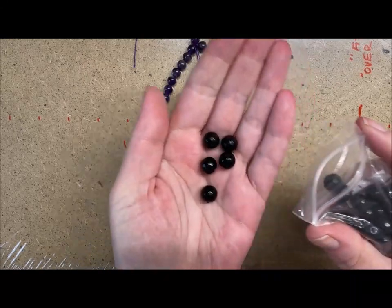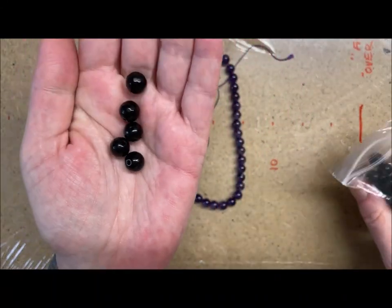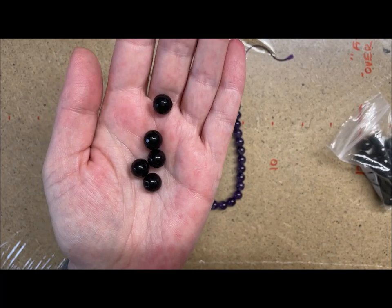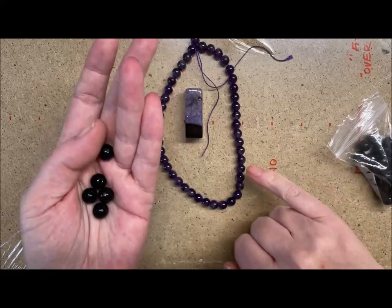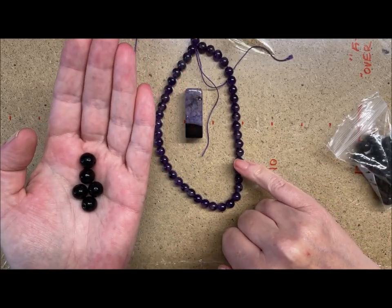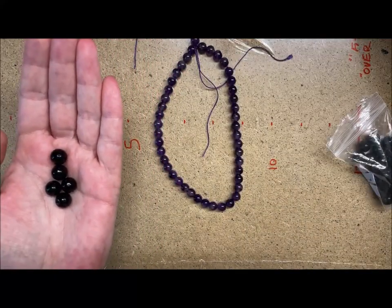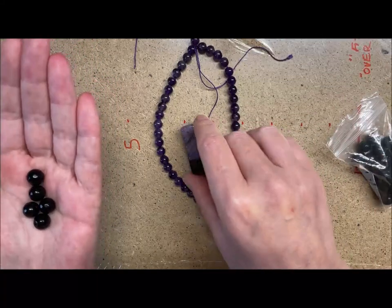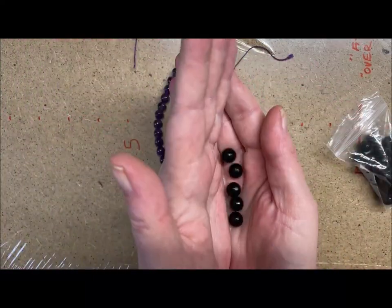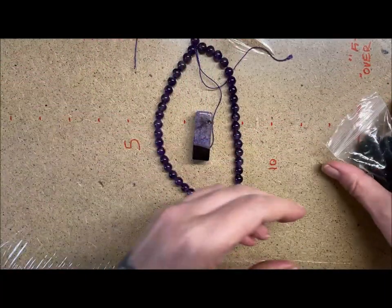onyx beads. Now these are 8mm beads, these are 6mm beads, and this is an inch and a half by half an inch size-wise. And I'm just going to use a simple black satin cord.